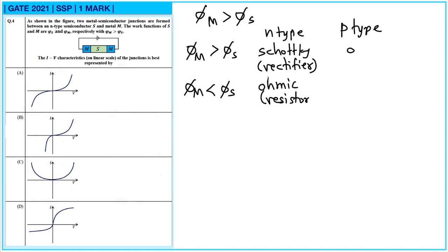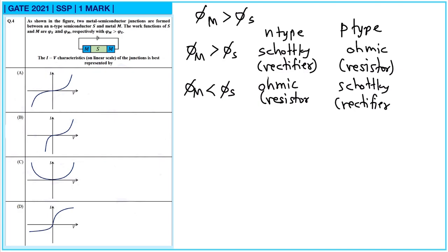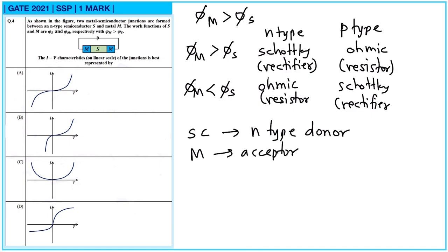For a P-type semiconductor, if φM is greater than φS it will be an ohmic junction (resistor), and if φM is less than φS it will be a Schottky junction (rectifier). In our case with N-type and φM > φS, the semiconductor acts as an N-type donor and the metal acts as an acceptor, forming a Schottky junction — so option A is correct.